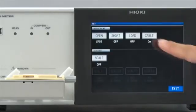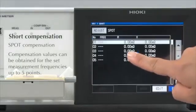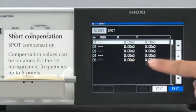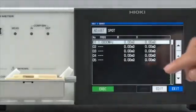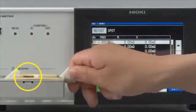Next, conduct short compensation in the same way. Set at 1 MHz. Short the fixture and then conduct compensation.